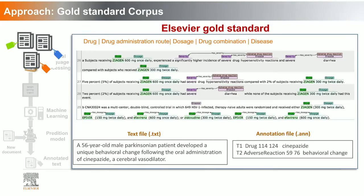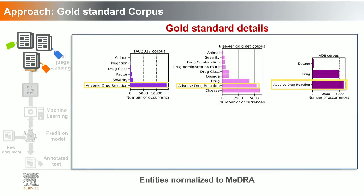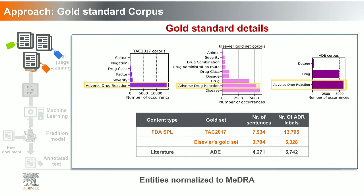In the Elsevier gold set, we are extending entities with drug administration route, dosage, combinations, and disease. At the bottom of the slide, you can see how we convert these annotations into an annotation file. For example, we have an adverse reaction 'behavioral change' from a drug. In the BRAT annotation file, you have the entity name, entity type, entity offsets (start and end position), and the entity being extracted.